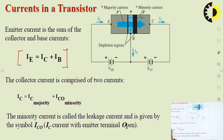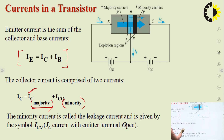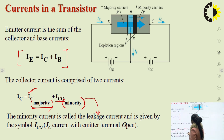The collector current is composed of two components. The majority of it comes from majority charge carriers, represented as IC. There is also a slight amount of current due to minority charge carriers, represented as ICO. This minority carrier current is called the leakage current.